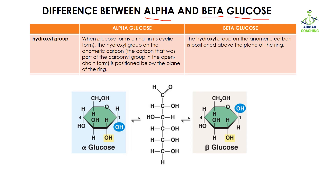The main difference between alpha and beta glucose is the position of the hydroxyl group, which is known as OH. When glucose forms a ring — normally glucose is present in a linear structure and its carbon starts from one and goes all the way to six — but when this linear structure is converted into the ring structure or cyclic form, the position of the hydroxyl group on the anomeric carbon is critical. The anomeric carbon is the carbon that was part of the carbonyl group in the open chain form.